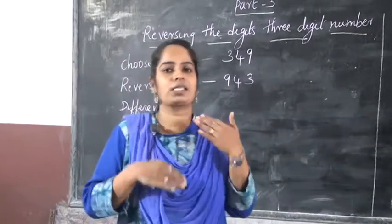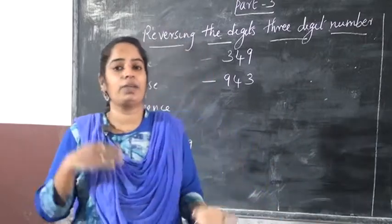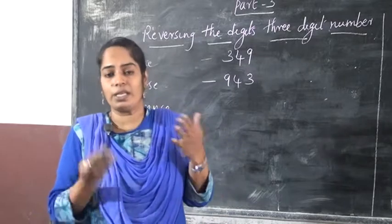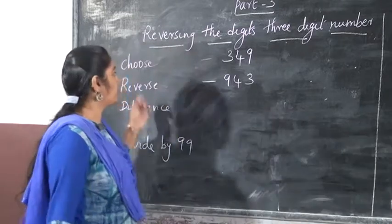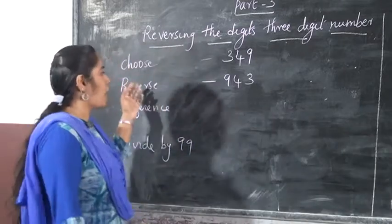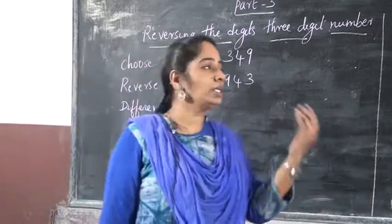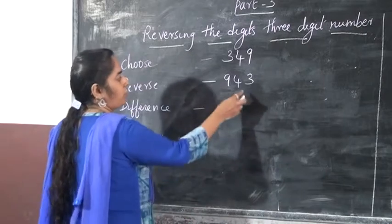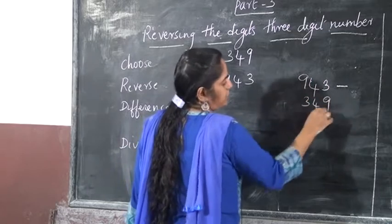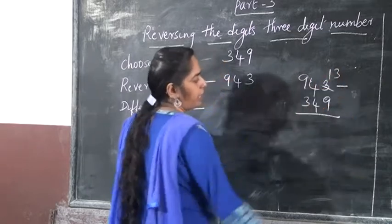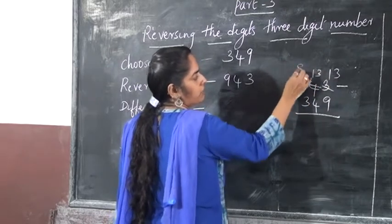We have just looked in the last class what: 2-digit numbers and all. When we are adding, reversing and then adding, and also when the number is reversed and then we are subtracting — we saw all that. Like that itself here also, they choose a 3-digit number and when we are reversing that number, we want to find out the difference of these two numbers. That is 943 minus 349.